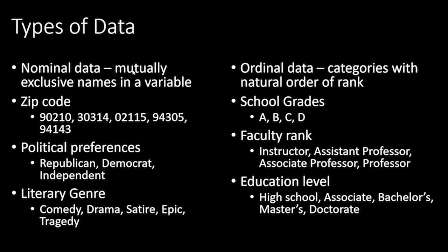A similar type of data but with rank is called ordinal data. Ordinal data has a natural order — for example, school grades A, B, C, D where A is better than B, B is better than C. Faculty ranks are also naturally ordered: instructor is a lower rank than assistant professor, lower than associate professor, then professor. Education level is another example. The reason we go through types of data is because they influence what statistics and distributions you assume.